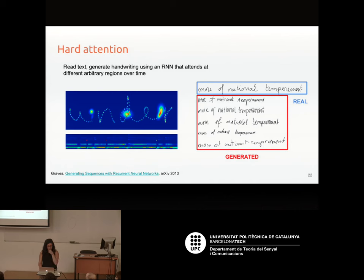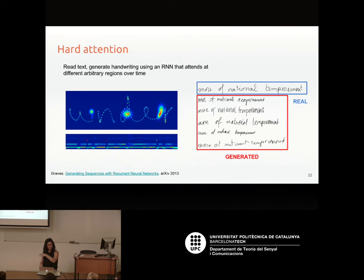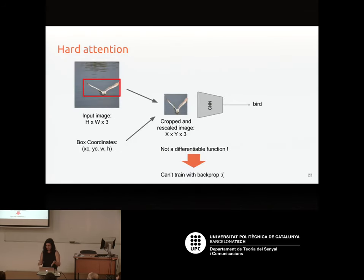There's also other work where instead of generating images, you learn to generate handwritten text — the same idea, an attention model attends to different regions in the output and generates text. There's a demo where you can type random text and the network generates different handwriting samples. Since we prefer training with gradient descent over reinforcement learning, let's find a way to make hard attention differentiable.